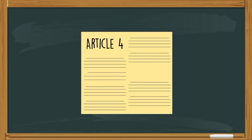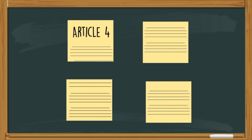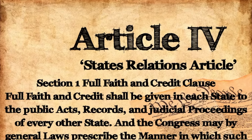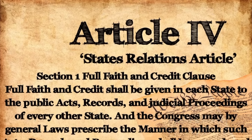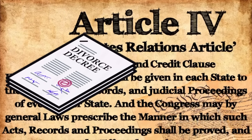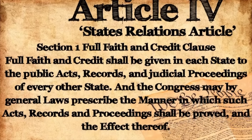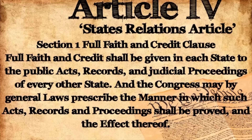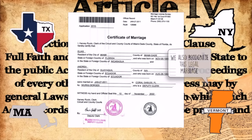Article 4 of the Constitution helps answer these questions and many more. It's broken down into four sections. Section 1, known as the Full Faith and Credit Clause, mandates that each state must recognize the public acts, records, and judicial proceedings of every other state. In other words, if you're legally married in one state, you're married everywhere.